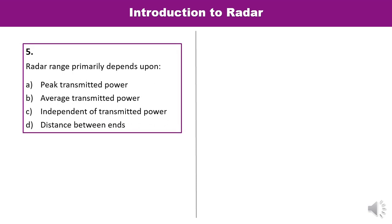Question 5: Radar range primarily depends upon which factor? It depends on the transmitted power — specifically the peak transmitted power. Out of the four options, A is the correct one.